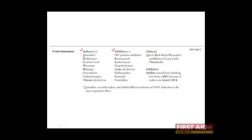Some of the most common P450 inhibitors are HIV protease inhibitors, ketoconazole, erythromycin, grapefruit juice, acute alcohol use (that is ethanol), sulfonamides, isoniazid, and cimetidine. You can remember these drugs with the mnemonic here.